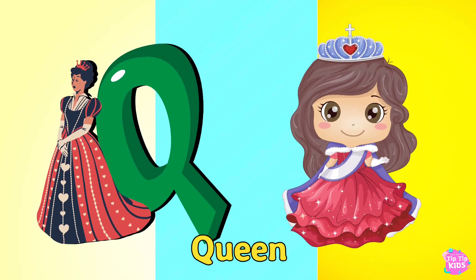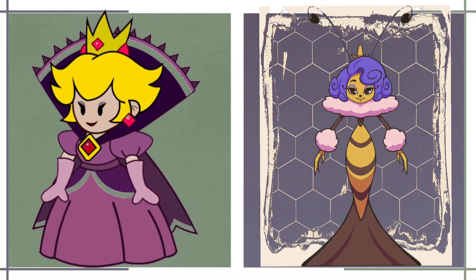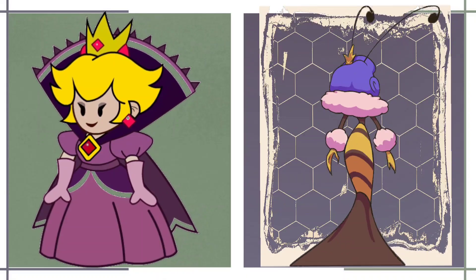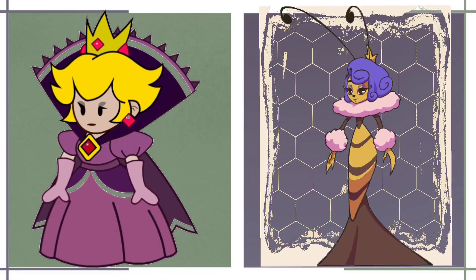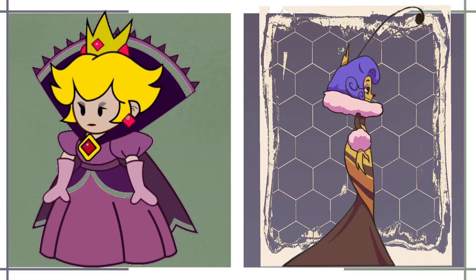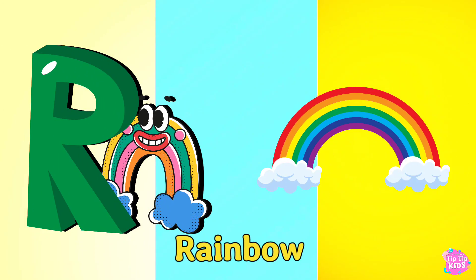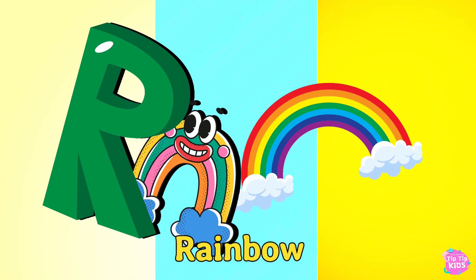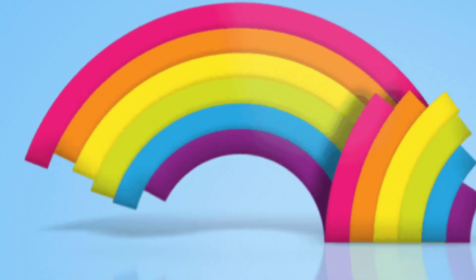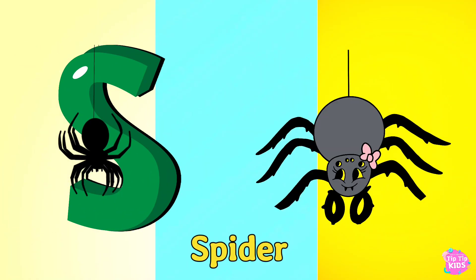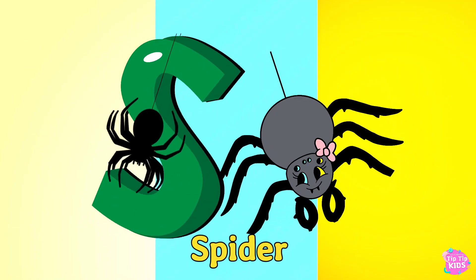Q is for Queen. Q, Queen, Q. Queen, Q. Queen. R is for Rainbow. R, Rainbow, R. Rainbow, R. Rainbow.